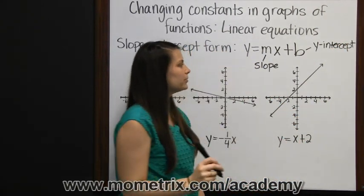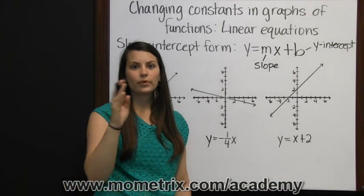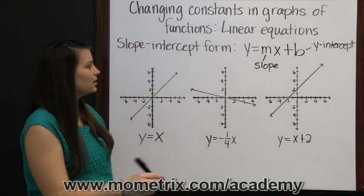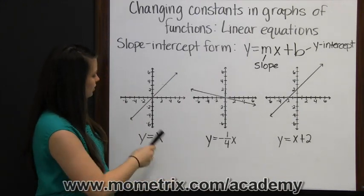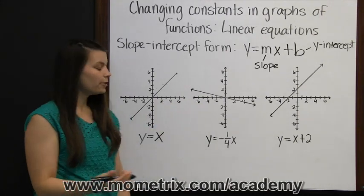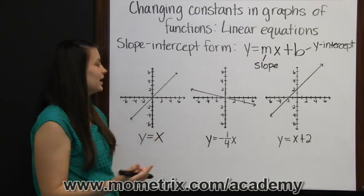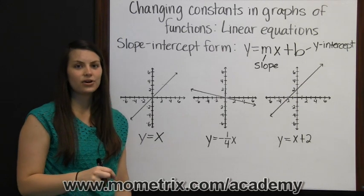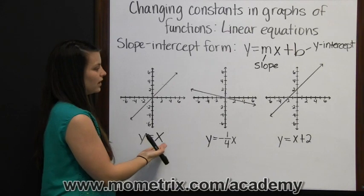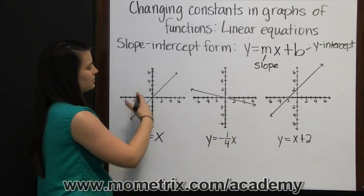The slope of a linear equation is how steep or flat the line is. Here we have three different graphs. The first graph and the last graph have the same slope. The slope is 1, since the coefficient of x is 1. This is actually the parent function of a linear equation, y equals x. When your slope is positive, like it is in the first and the last graph, then the line increases from left to right.